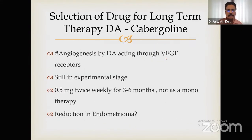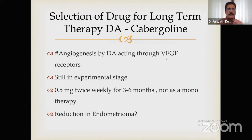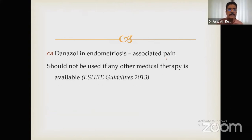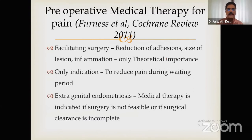Cabergoline is still in an experimental state but is beginning to be used. Based on a thesis study over six months, there was pain relief for patients but no decrease in the size of the endometrioma. So experience with cabergoline is still limited. Danazol should not be used per old and new ESHRE guidelines.